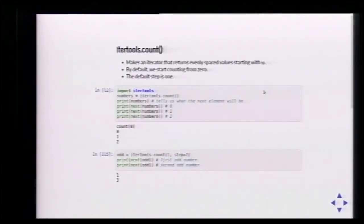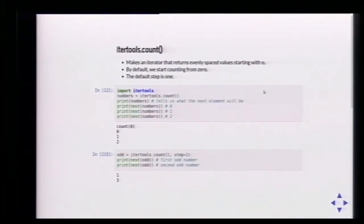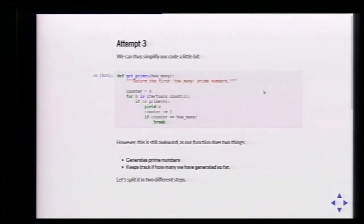That's where itertools.count comes in, because we're in the itertools talk. itertools.count is super simple but cute — it makes an iterator that returns numbers. By default we count from zero with a step of one. In other words, it's like range() but with no upper limit — we can keep calling it forever. So we can say 'for number in itertools.count' and that's never going to stop.